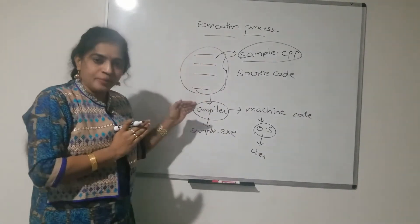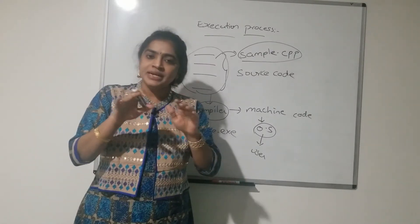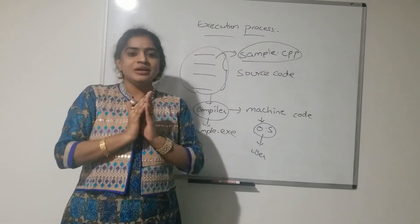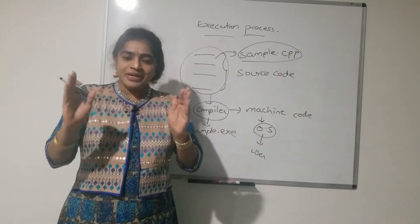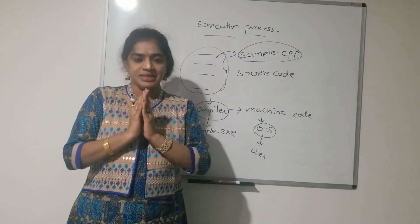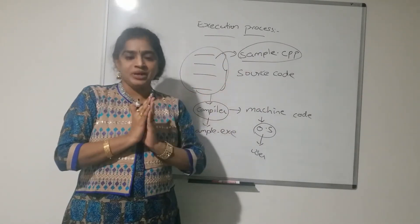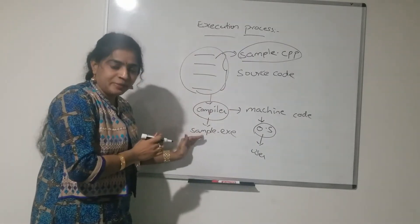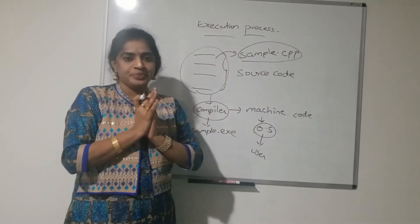This is the internal process of how execution takes place. We write some code — that code is called source code. After writing the code, we save it with the .cpp extension. Then we compile the code. Compilation means checking for errors. Once compilation is successful, the compiler converts our source code to machine code. So sample.cpp is now converted to sample.exe, the executable file.